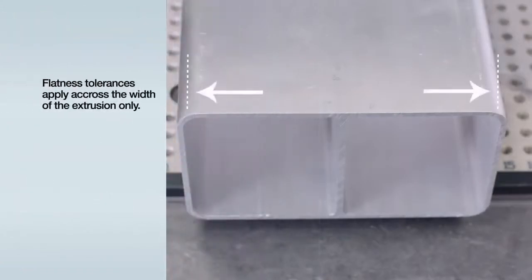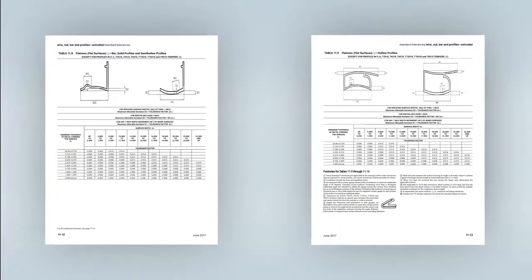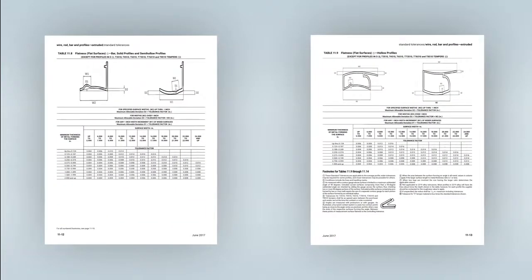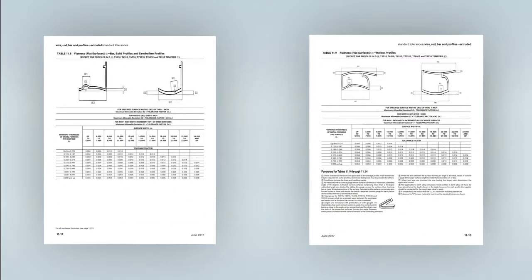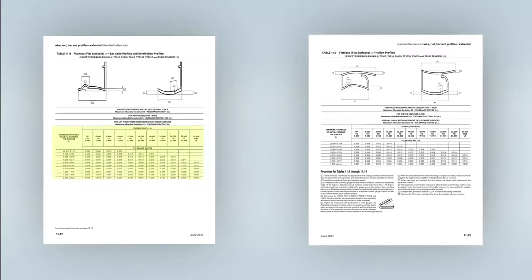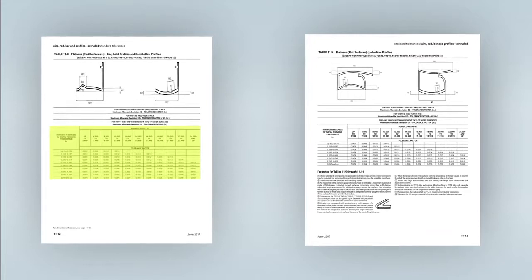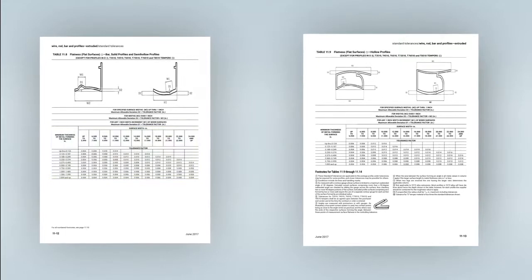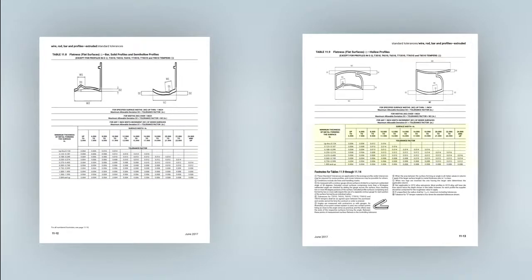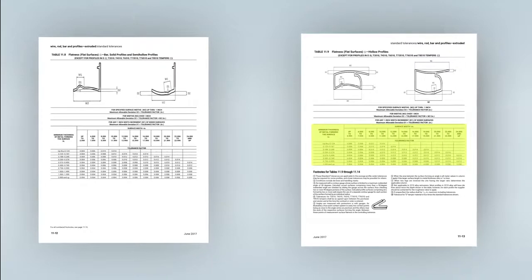Flatness tolerances apply across the width of the extrusion only. Different flatness tolerances apply to solid profiles versus hollow profiles. Flatness tolerances for solid profiles, including bar and semi-hollow profiles, can be found in Table 11.8. Table 11.9 contains tolerances for hollow profiles.